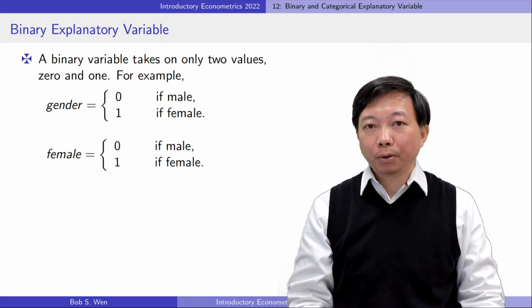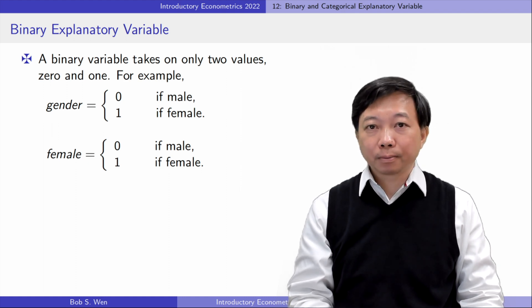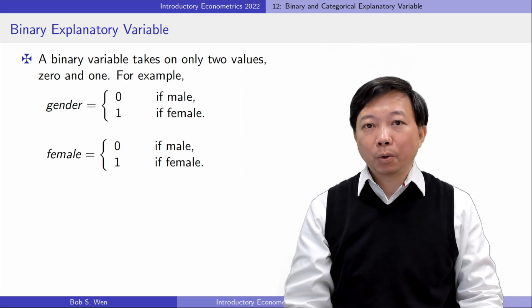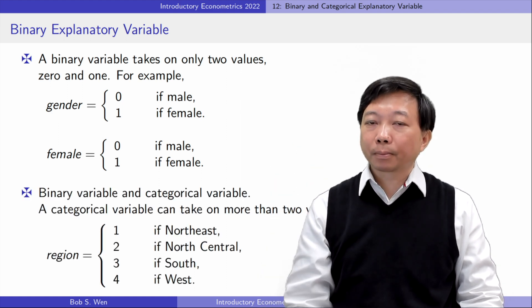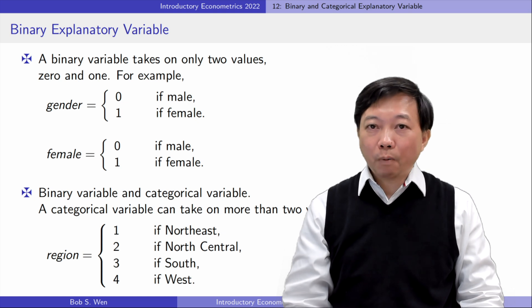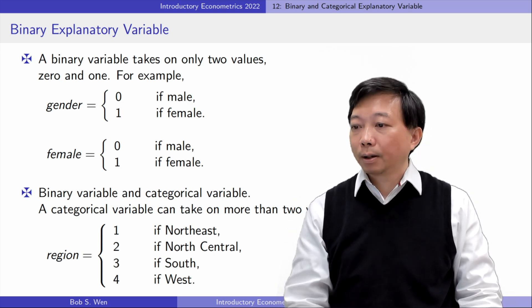Binary variables are special case of categorical variables. A categorical variable can take on more than two values. For example, the variable region is a categorical variable. It has four values, from one to four.